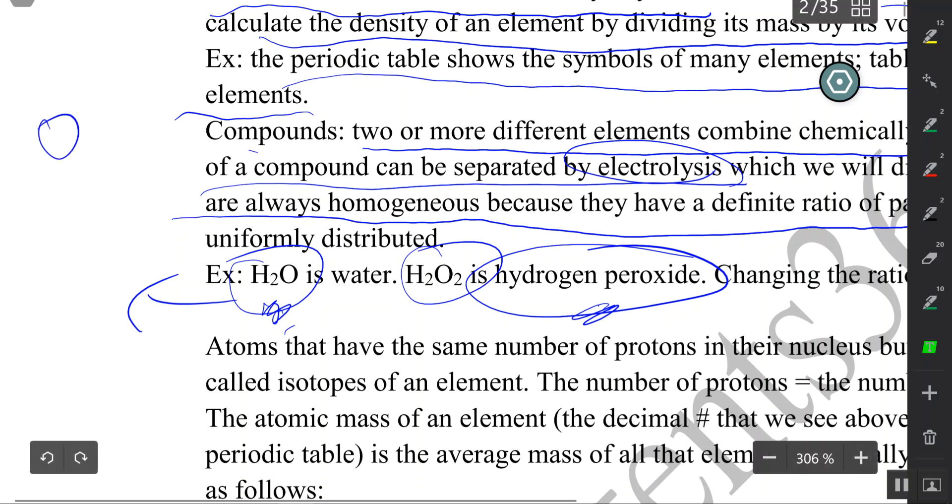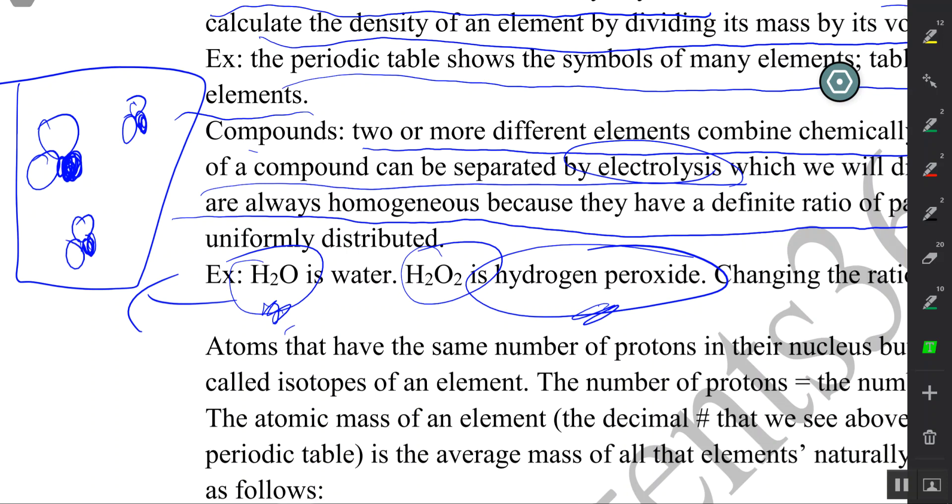So if you were to draw the compound dihydrogen monoxide, also known as water (dihydrogen for two hydrogens, monoxide for one oxygen), it would look like this: two hydrogens, one oxygen. And every compound of water will have that same uniform arrangement of particles.